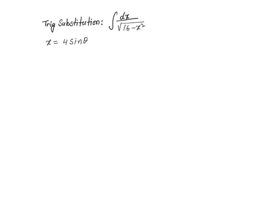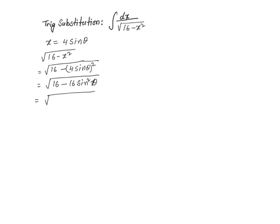If I make x equal to 4 sine of theta, then the denominator becomes very nice and simple. 16 minus x squared is equal to square root of 16 minus 4 sine of theta whole squared, which is square root of 16 minus 16 sine squared of theta. That is equal to square root of 16 times 1 minus sine squared of theta, which I could further simplify to square root of 16 times square root of 1 minus sine squared of theta. That is cosine squared of theta, because sine squared of theta plus cosine squared of theta is equal to 1.